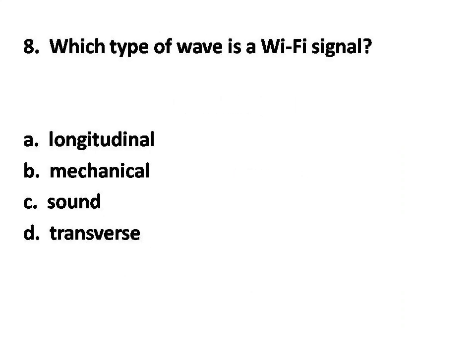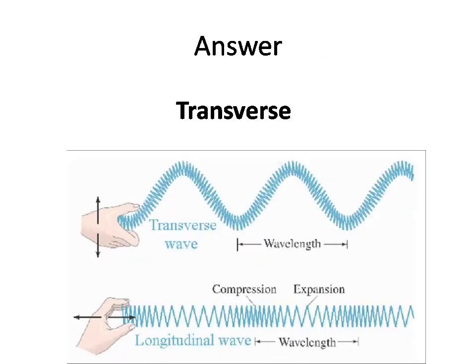Question number eight. Which type of wave is a Wi-Fi signal? Options are: A. Longitudinal. B. Mechanical. C. Sound. D. Transverse. Answer is option D — transverse waves.